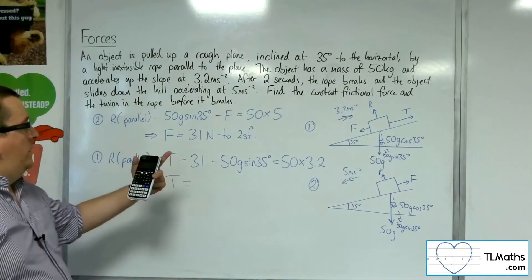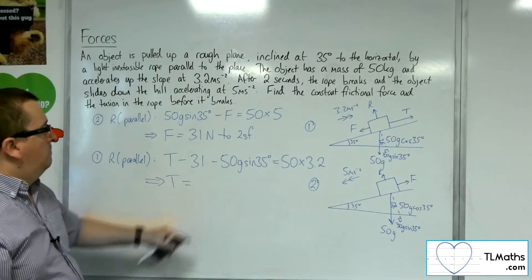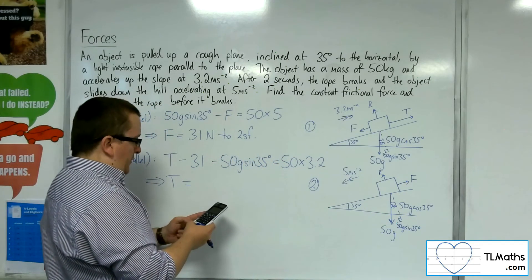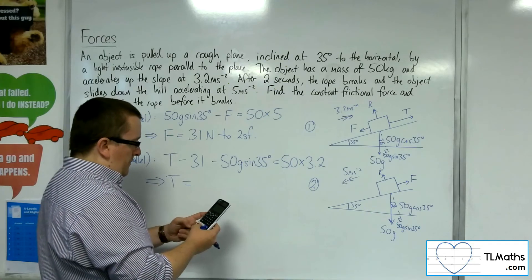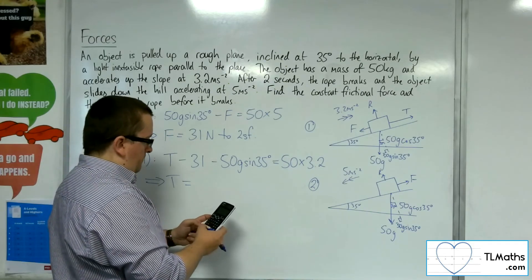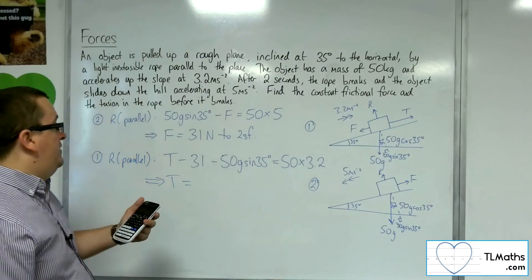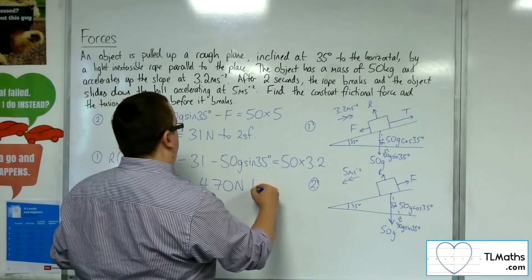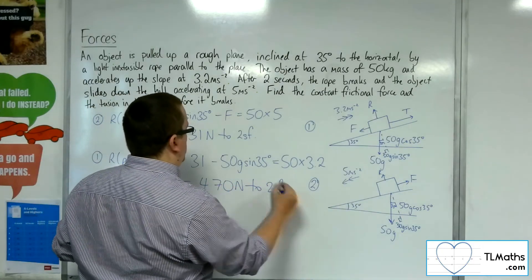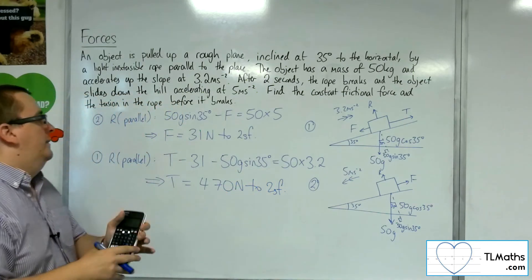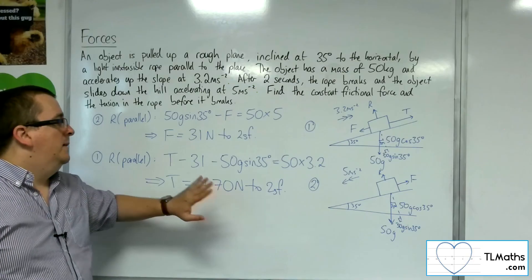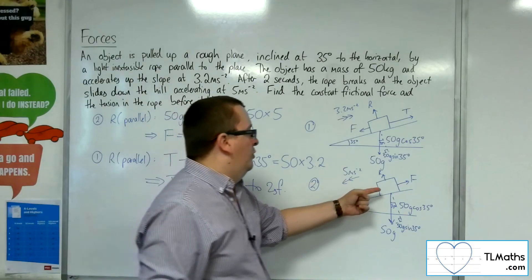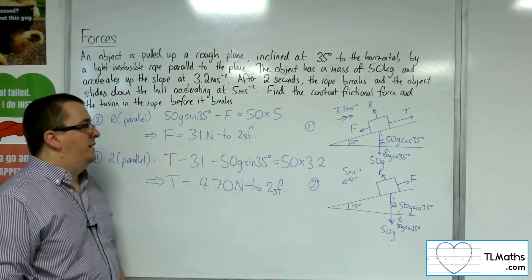I've still got 31.052 in my calculator display. I'm going to add that on to 50 times 3.2, and I'm going to add on 50 times 9.8 times sine of 35. That gets to be 472.104, so 470 newtons to two significant figures. That is the tension in the rope before it breaks, and subsequently we have this motion of the block hurtling down the slope.